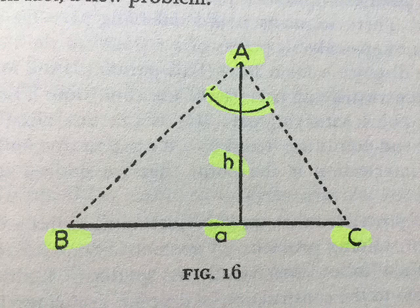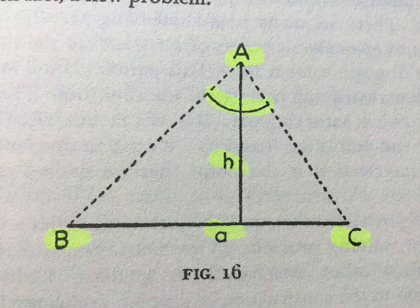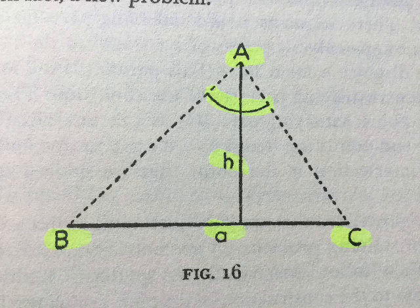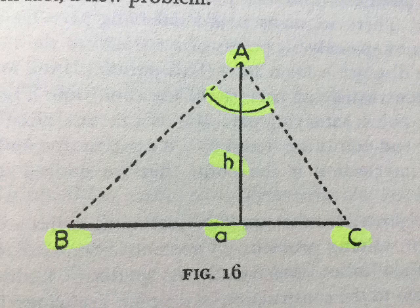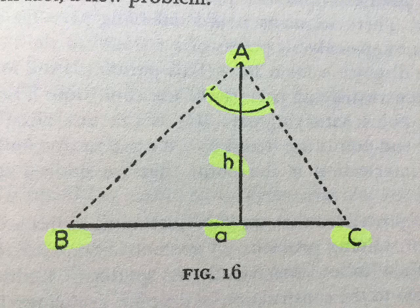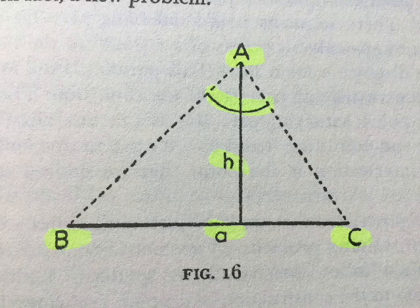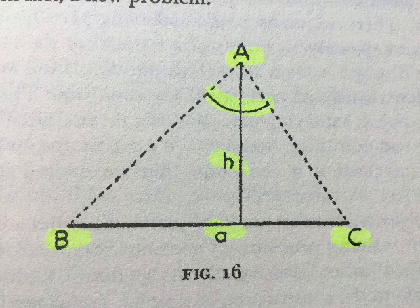You have an impression of the object as a whole, but this impression is possibly not definite enough. A detail strikes you and you focus your attention upon it. Then you concentrate upon another detail, then again upon another. Various combinations of the details may present themselves and after a while, you again consider the object as a whole, but you see it now differently. You compose a whole into its parts, and you recombine the parts into a more or less different whole.